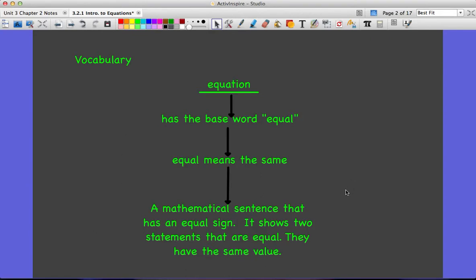It shows two statements that are equal, meaning they have the same value. Previously we talked about expressions, where we would have x plus 6, and that would be an expression. To make it an equation, we would say x plus 6 equals 10. Now because it has an equal sign, it becomes an equation. So what's on this side has to be the same as what's on this side.